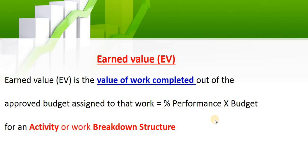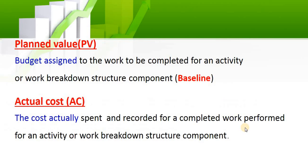Earned value is the value of work completed. How is this measured in P6 or in software? It is your performance percentage multiplied by your budget at the activity level or at the work breakdown structure level. Planned value is the budget assigned to any activity or WBS element, and it mainly comes from the baseline.